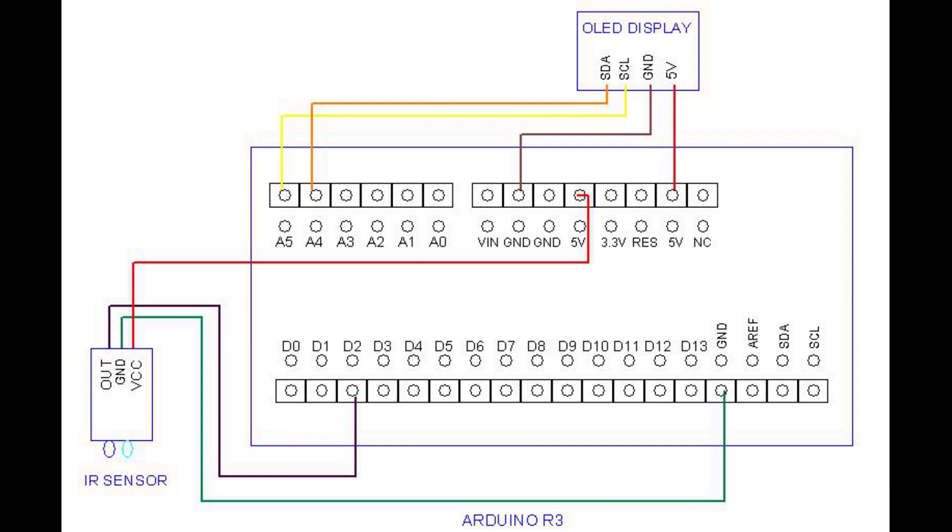I connected the module's VCC pin with a red wire to the Arduino 5 volt connector, the module's ground pin with a green wire to the Arduino's ground connector, and the module's out pin with a black wire to the Arduino's digital pin 2 connector.